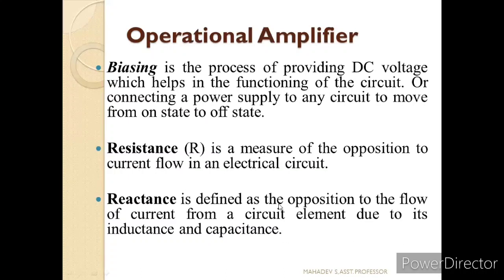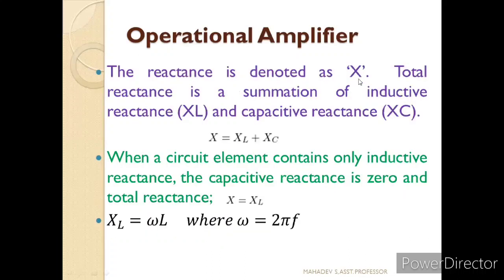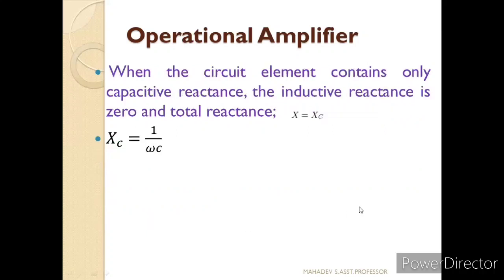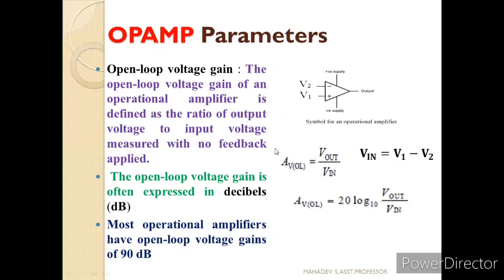We have another term: reactance. Reactance is defined as the opposition to the flow of current from a circuit element due to its inductance and capacitance, denoted by X. The total reactance is the summation of inductive reactance and capacitive reactance: X = XL + XC. XL is due to inductance, where XL = ωL and ω = 2πF. Similarly, if the circuit has only capacitance, then X = XC, where XC = 1/(ωC) and ω = 2πF.